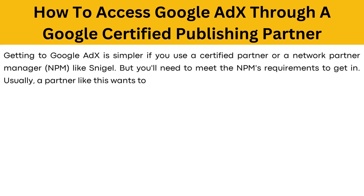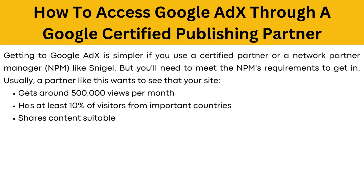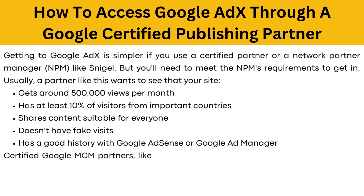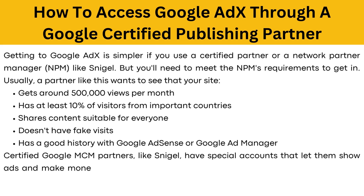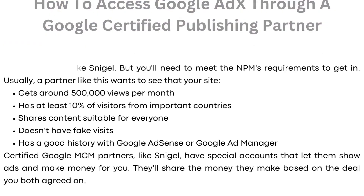Usually, a partner like this wants to see that your website gets around 500,000 views per month, has at least 10% of visitors from developed countries, shares content suitable for everyone, doesn't have fake visits, and has a good history of Google AdSense or Google Ad Manager. Certified Google MCM partners like Snigel have special accounts that let them show ads and make money for you. They'll share the money they make based on the deal you both agreed on.